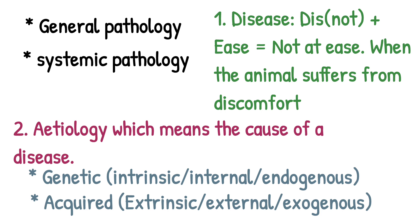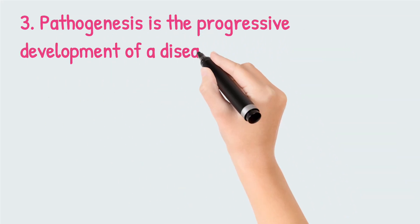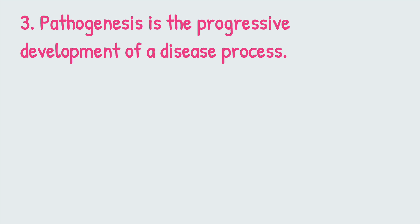The causes of disease include genetic factors, which can also be referred to as intrinsic, internal, or endogenous factors — the animal is born with these. The next are acquired factors, which can also be referred to as extrinsic, external, or exogenous factors. These are factors the animal is not born with; the animal gets them through feed, water, air, or soil.